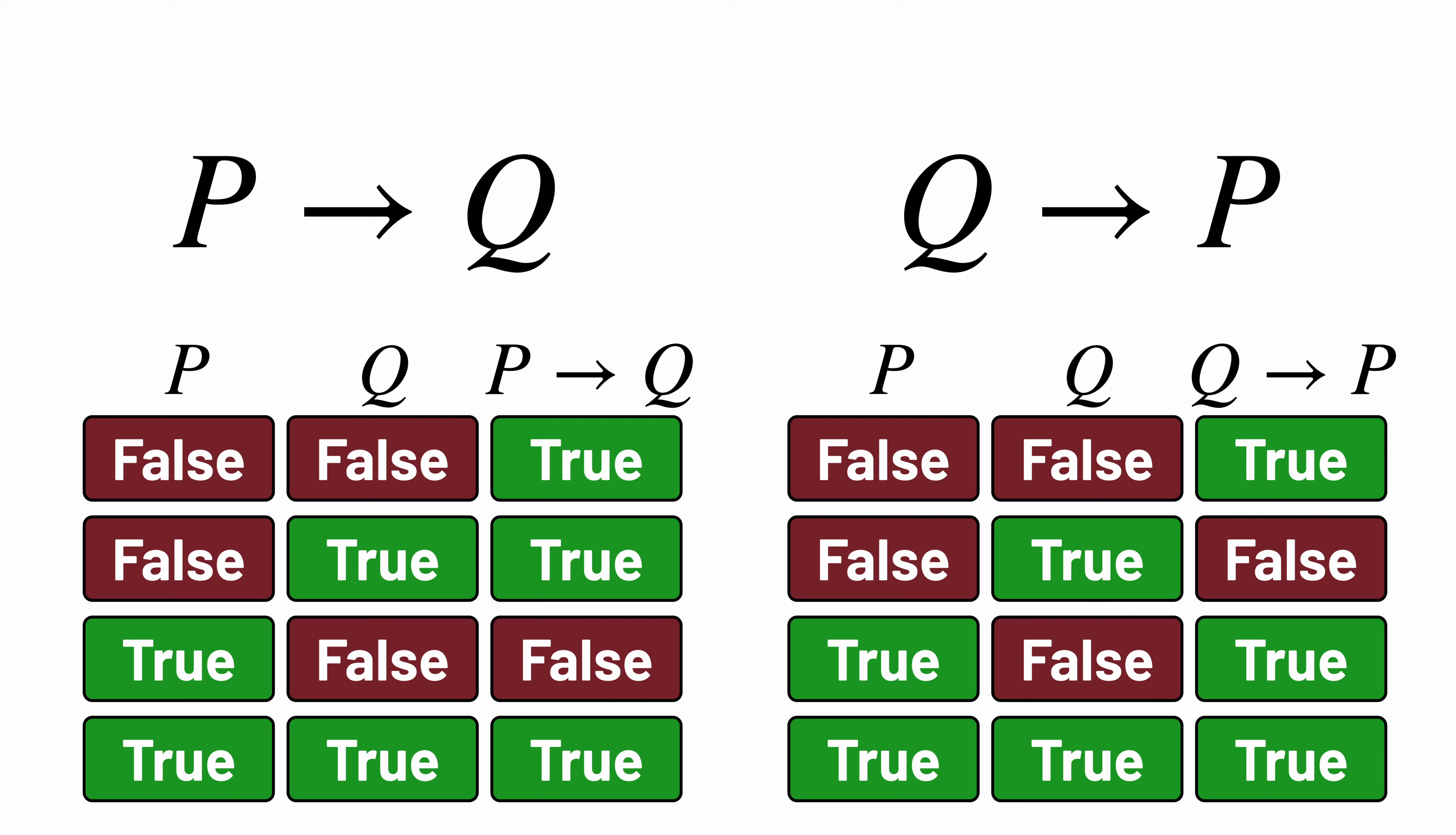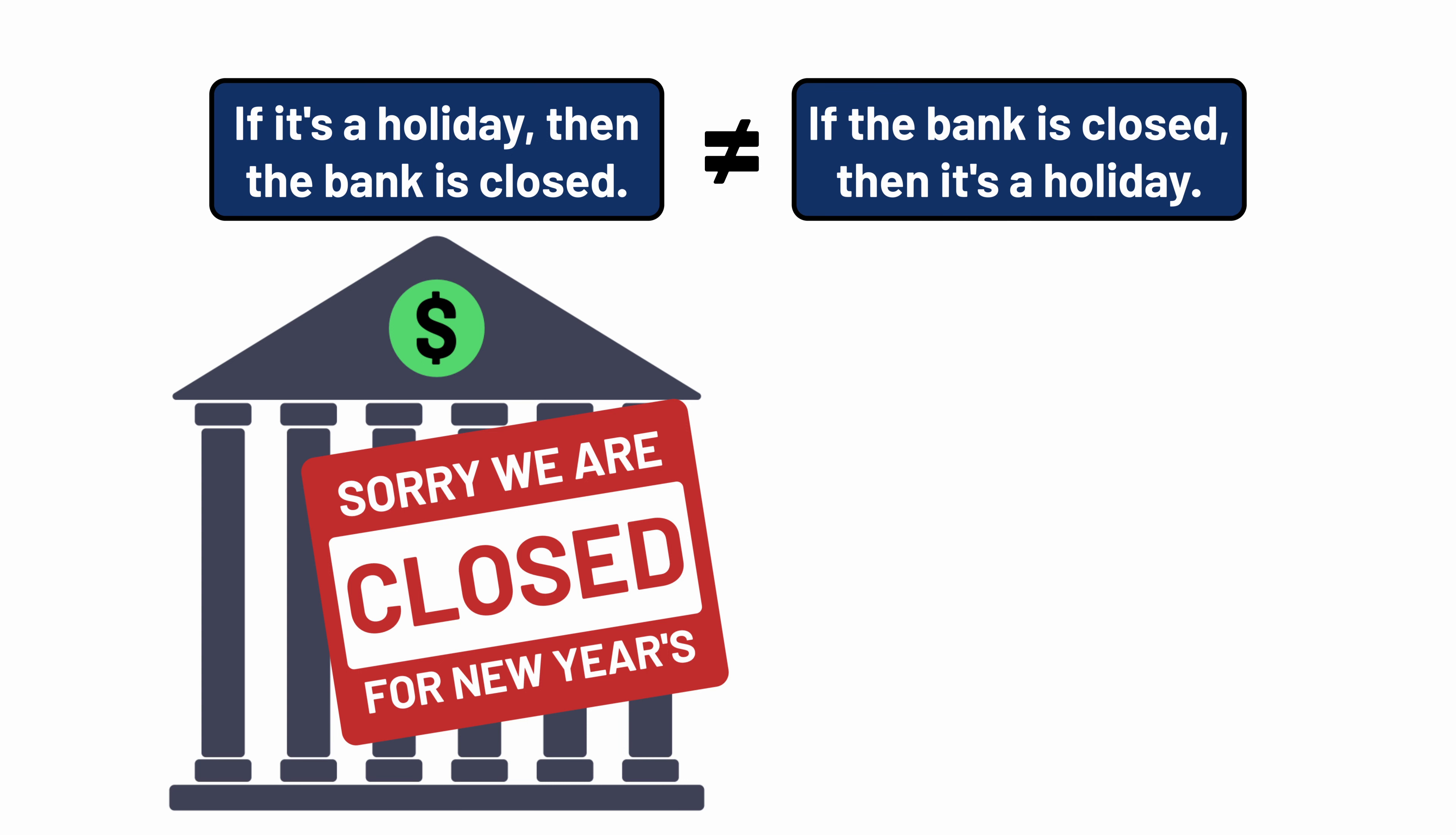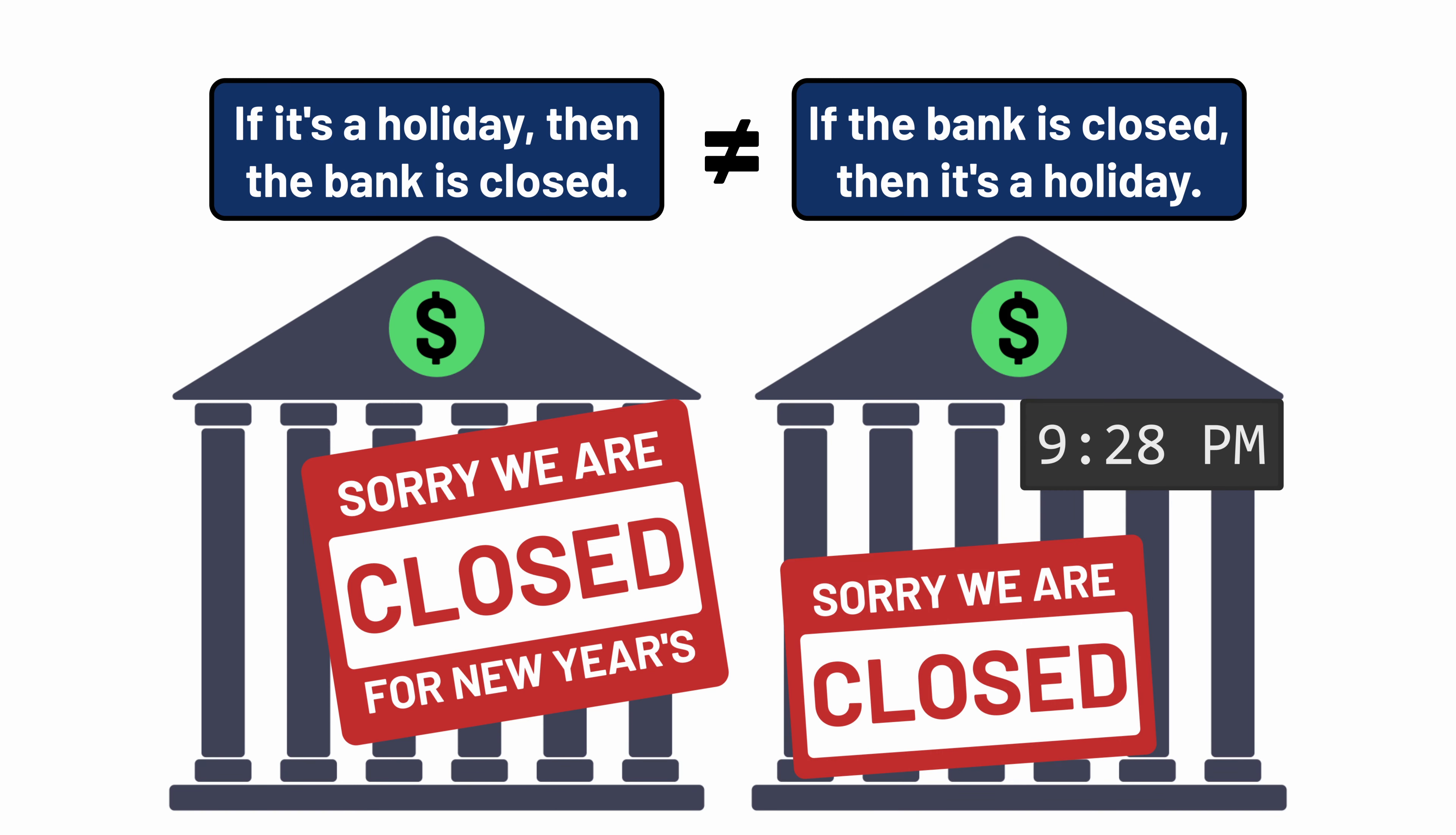And that makes sense too, given how we intuitively think about if and then. When I say 'if it's a holiday, then the bank is closed,' that doesn't mean the same thing as 'if the bank is closed, then it must be a holiday.' The bank might be closed for some other reason too.